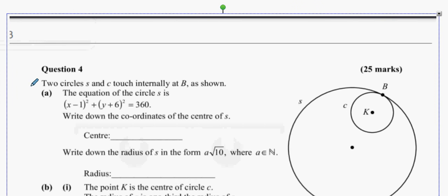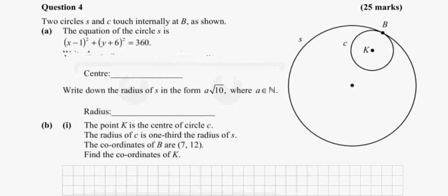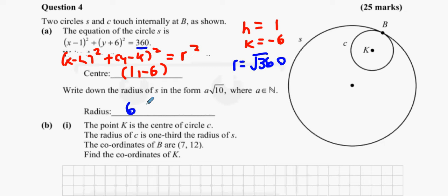Here we go. Two circles, S and C, touch each other internally at the point B as shown. The equation of S is this one here. Find the coordinates of the centre S. So you're doing X minus H squared, Y minus K squared equals R squared. And what you're going to say is that H equals 1, where you should have H you have 1, and where you should have K equals minus 6, and then the centre is 1 minus 6. Now, next thing. See the way R squared equals 360? So what does that mean? R equals the square root of 360. Square root that and you get 6 root 10. We all good so far?